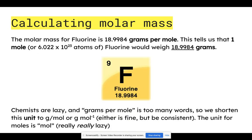What this tells us is that the molar mass for fluorine, for example, is 18.9984 grams per mole. That tells us that one mole or 6.022 times 10 to the power of 23 atoms of fluorine would weigh 18.9984 grams. Conversely, if I was given a sample of fluorine that weighed exactly 18.9984 grams, I would know that I am holding one mole of fluorine.